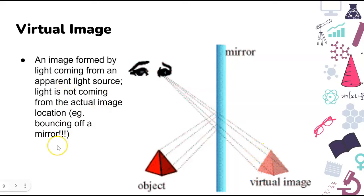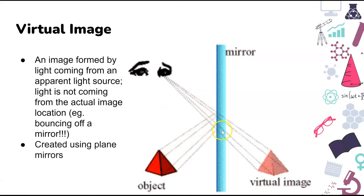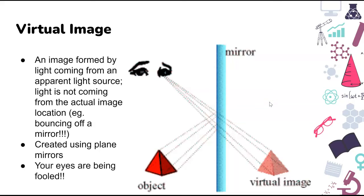So when we found the image, it was formed with what are called virtual rays of light. When we extended those reflected rays behind the mirror, we drew them as dotted lines because they're not actually rays of light. A virtual image is an image formed by light coming from an apparent light source — it looks like it's coming from there. We're smart enough to know that an object isn't actually buried in the wall behind a bathroom mirror, but simpler organisms can be fooled by a mirror into thinking there is an actual object behind it.